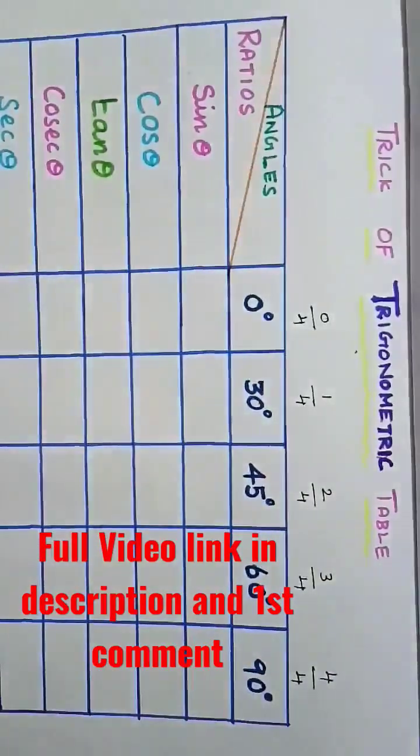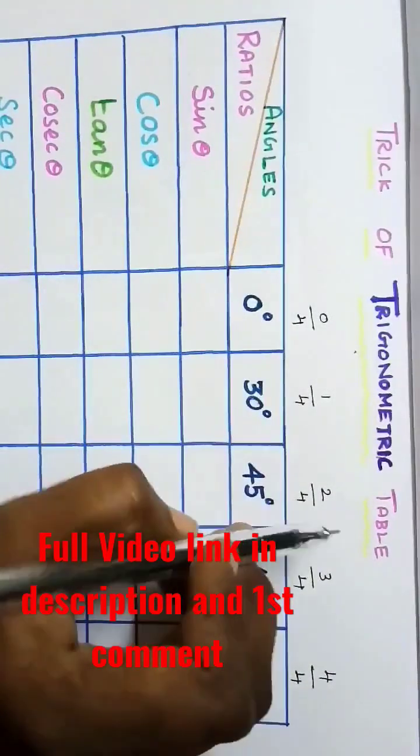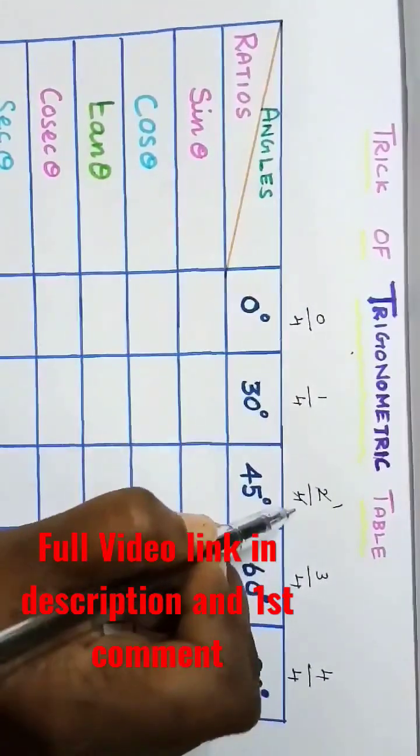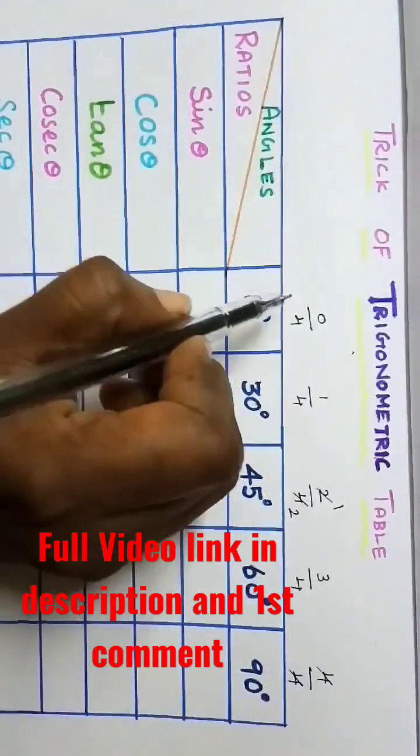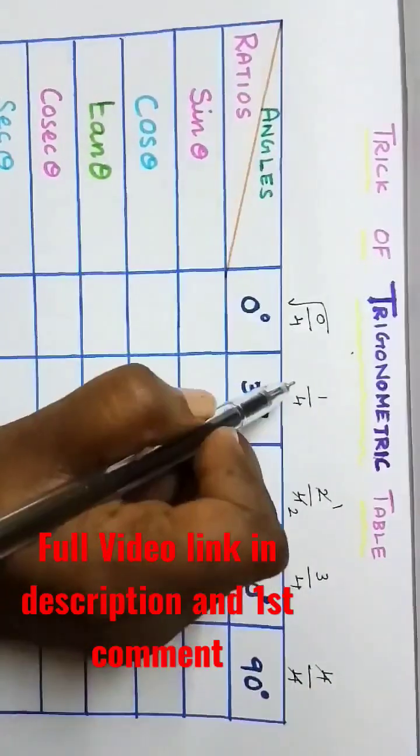Now simplify this: 1 twos are 2, 2 twos are 4, here 4 ones are 4, 4 ones are 4. Now take the square root of all the numbers.